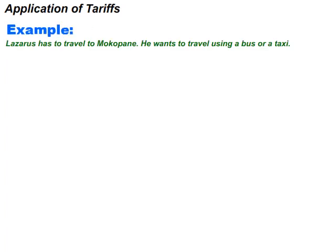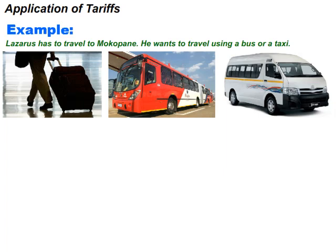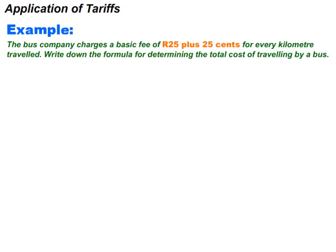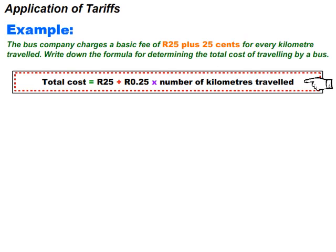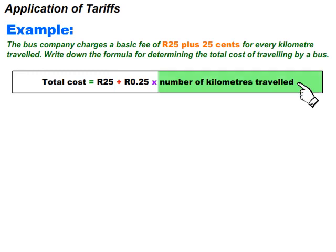Lazarus has to travel to Mokoba. He wants to travel using a bus or a taxi. The bus company charges a basic fee of 25 rand plus 25 cents for every kilometer traveled. The formula for determining the total cost of using the bus is: total cost equals 25 rand plus 25 cents multiplied by number of kilometers traveled. The 25 rand is the basic fee, and the 25 cents is the rate per kilometer, which must be multiplied by the number of kilometers traveled.